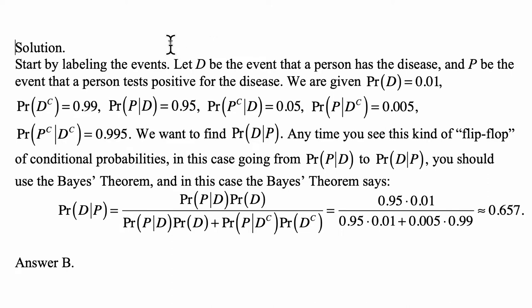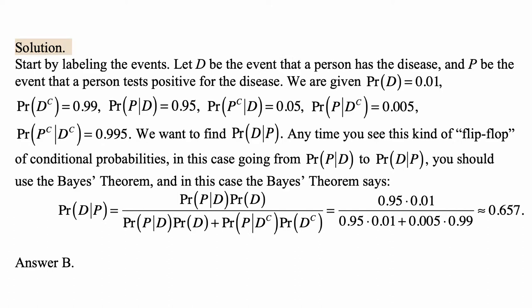Here's a solution. We start by labeling the events. Let D be the event that a person has a disease and P be the event that a person tests positive for the disease. So we are given that P(D) = 0.01, therefore P(D complement) = 0.99. P(P given D) = 0.95, and P(P complement given D) = 0.05. P(P given D complement) = 0.005, and P(P complement given D complement) = 0.995. We want to find P(D given P).